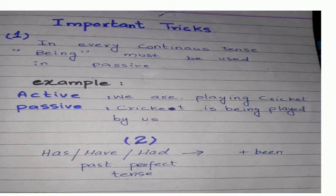The second trick is: if we see 'has' or 'have' — past perfect tense — in the sentence, we use 'been.' In the past form we use 'been.' In the past perfect tense, with the third form of verb, we use 'been.'